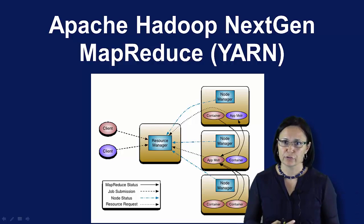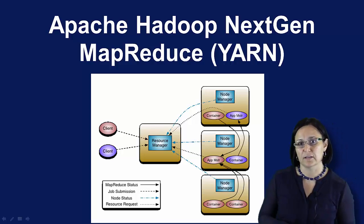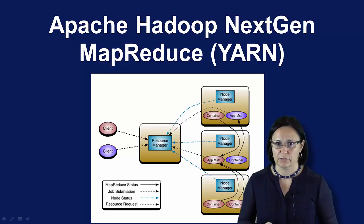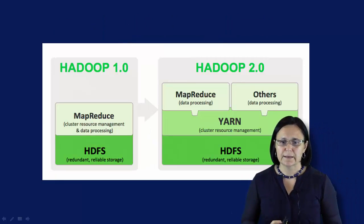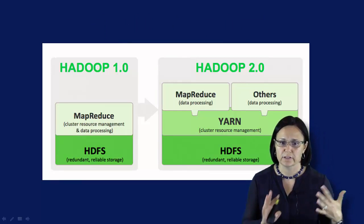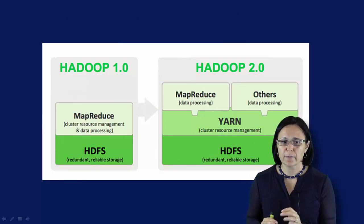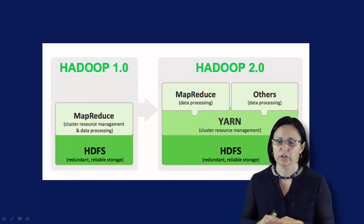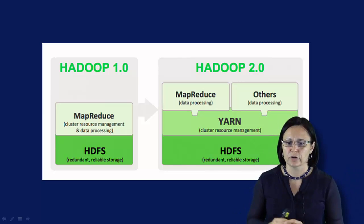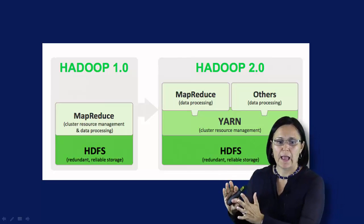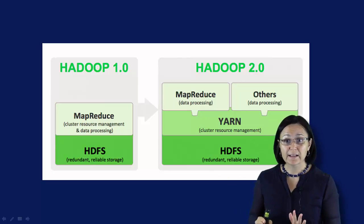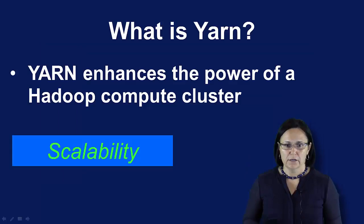The YARN basic architecture in Hadoop 2.0 provides a more general processing platform that is not constrained to Map and Reduce kinds of processes. The fundamental idea behind MapReduce 2.0 is to split up the two major functionalities of the job tracker — resource management, and job scheduling and monitoring — into two separate daemons. The idea is to have a global resource manager and a per-application application master manager. I'm not going to go into too much detail here because this is covered in the next module.